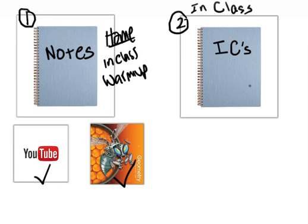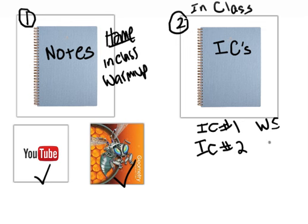In class, your second spiral is going to be in what I call ICs. So you'll have a list of ICs that we'll do. We'll have IC number one, and that could be a worksheet. And then we could have IC2, and that could be book work. We'll just say BW for short, book work.